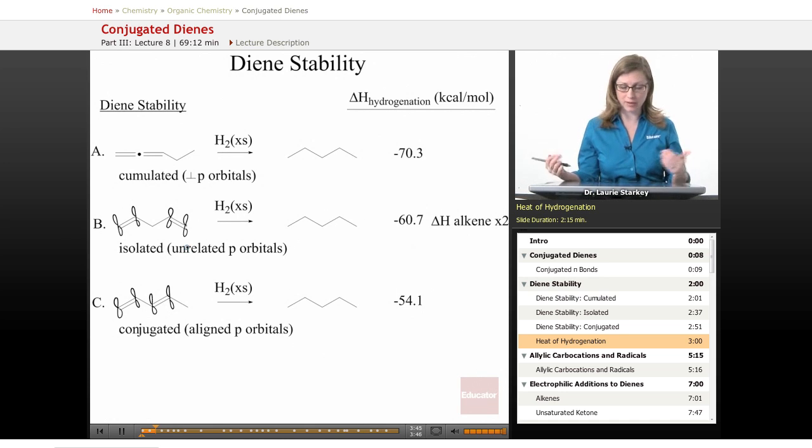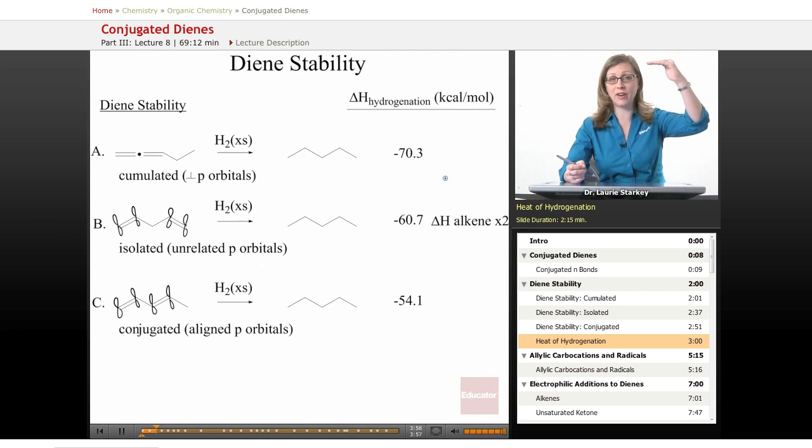However, when you force those two pi bonds to be accumulated next to one another, we actually get out more energy from the reduction of this diene, meaning it started out at higher energy. This is an unstable arrangement of double bonds.